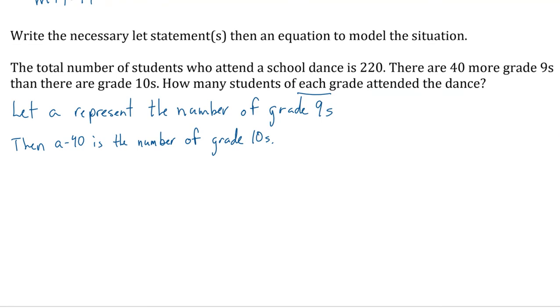This can be tricky. One strategy that I find works really well. Imagine a number of grade nines. Somebody just, it has nothing to do with this question, just what could be a number of grade nines in a school? Just give me an easy number. 110. And there's 40 more grade nines. So how many grade tens would there be? 70? 70 plus 40 is 110. So there's 40 more grade nines. What's another number? How about 200? So how many grade tens would there be? 160? What's the relationship there? Well, I'm always subtracting to get the number of grade tens. Always subtracting. So the number of grade tens is A minus 40.